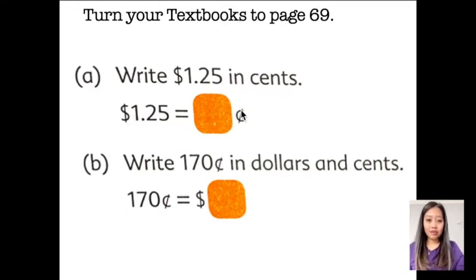Write 125 in cents. So since this is a hundred, how can we write that in cents? Yes, we write it as 125 cents or one dollar, 25 cents. How about this? Write 170 cents in dollars and in cents. I'll give you five seconds. The answer is 1 dollar, 70 cents.